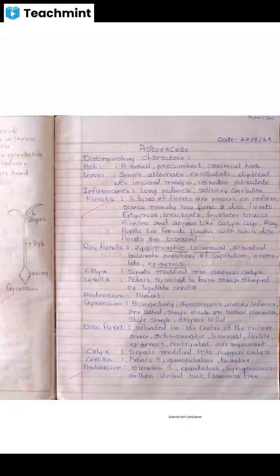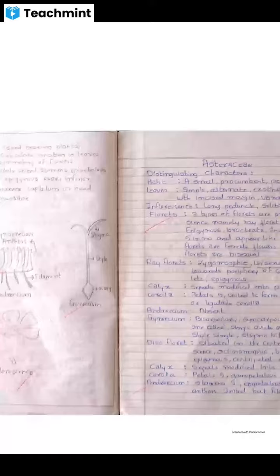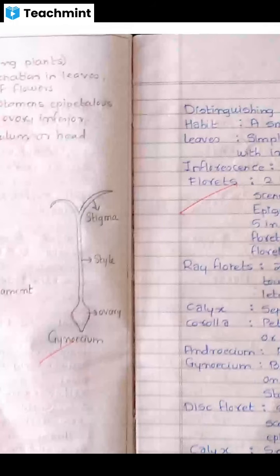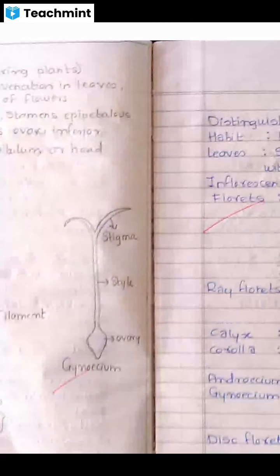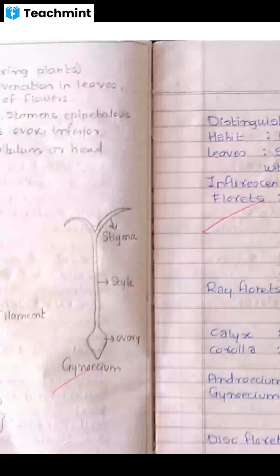Stigma bifid means divided into two equal lobes or parts. Looking at the diagram, the stigma is bifid — divided into two equal lobes. Bifid stigma means the stigma is divided into two equal parts.